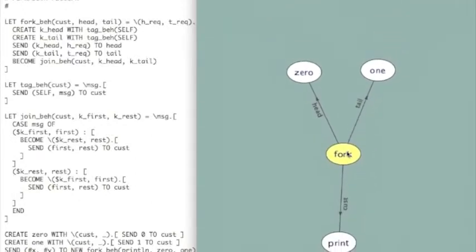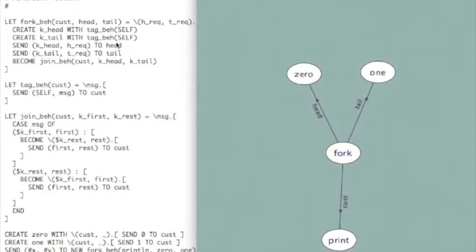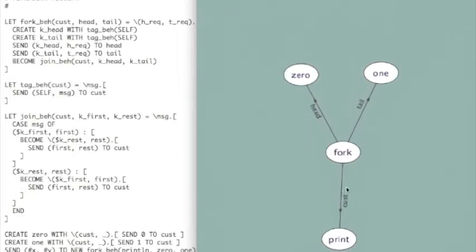And then I'm going to create this fork. That's done by this behavior here. So what I've done here is I've created an actor that specifically has a customer, in this case an output customer who's going to print the result, and a reference to a head and a tail actor.